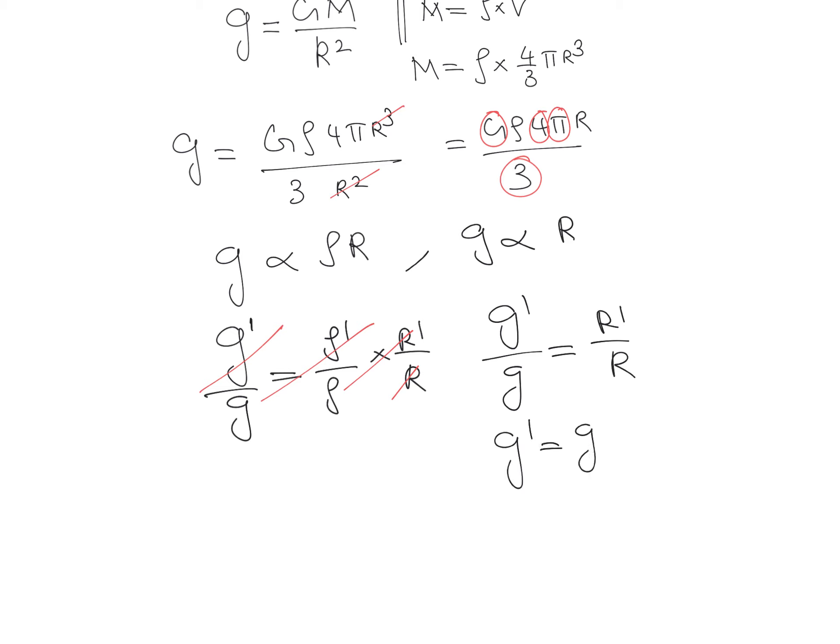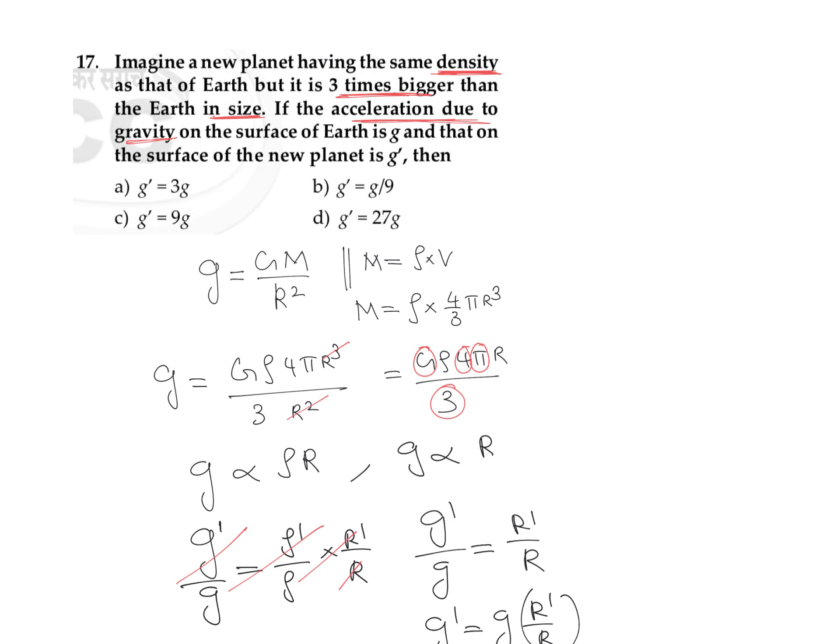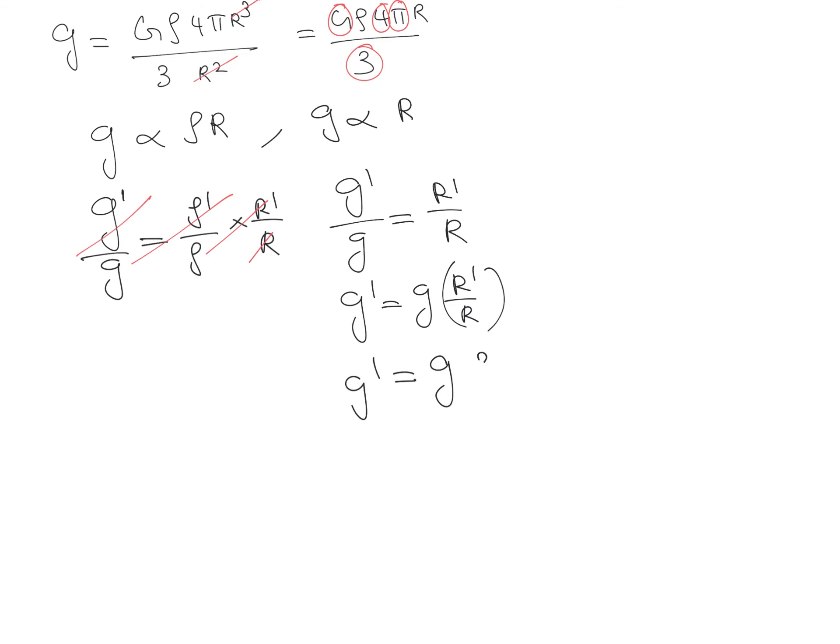So we can write g dash is equal to g into R dash divided by R. Now in the question it is given that the size is 3 times bigger than the Earth size. So R dash is 3 times that of radius of R. We can cancel this R and R, so our answer becomes g dash is equal to 3g.